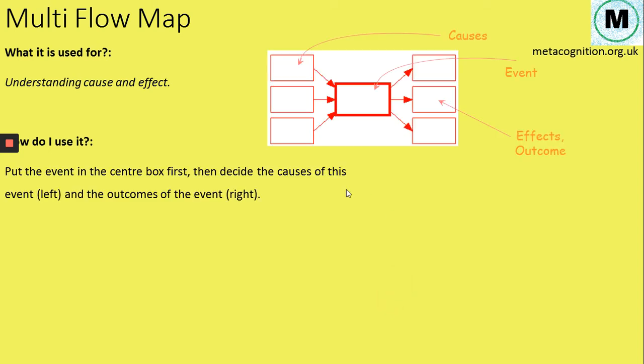So how do you use it? You put your event in this center box. That's the first thing you do. You have to start with the event, that's the most important thing. Then you put causes on this left-hand side and you put arrows into that event because they are what caused that event to happen.